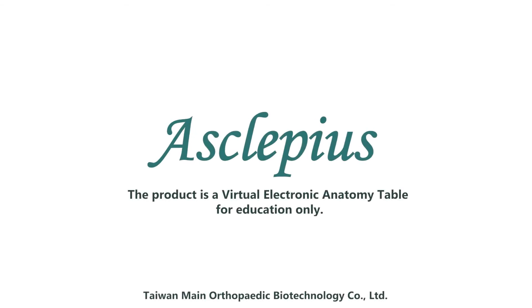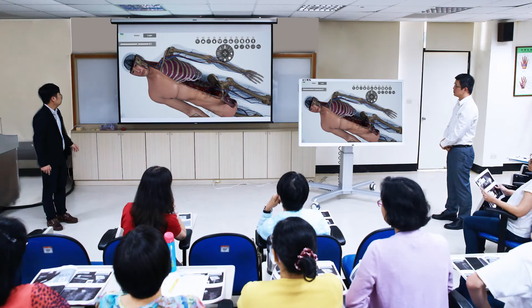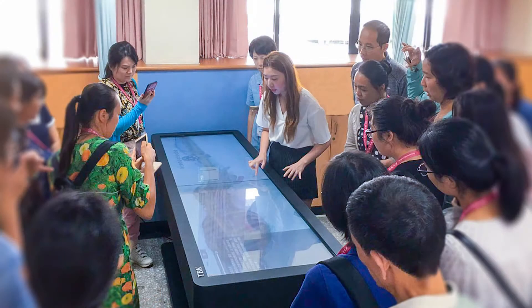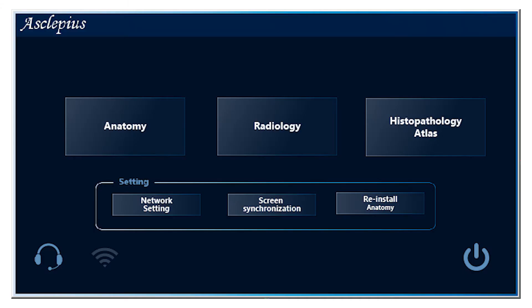Asclepius Virtual Anatomy Table is a great teaching aid for medical institution professors. Asclepius is equipped with three software packages inside: namely anatomy, radiology, and histopathology atlas.